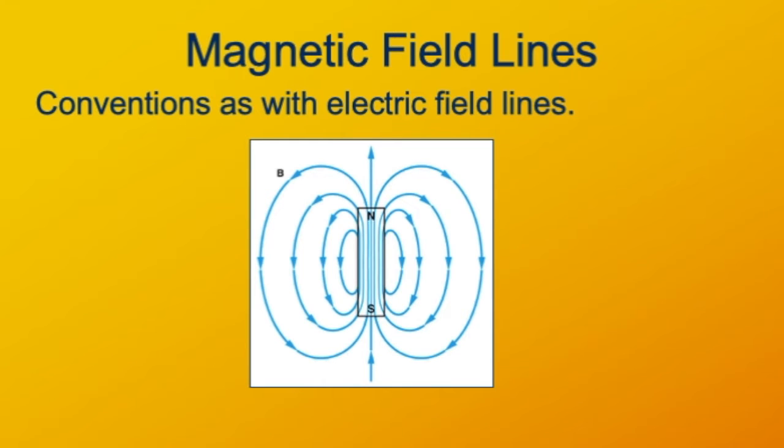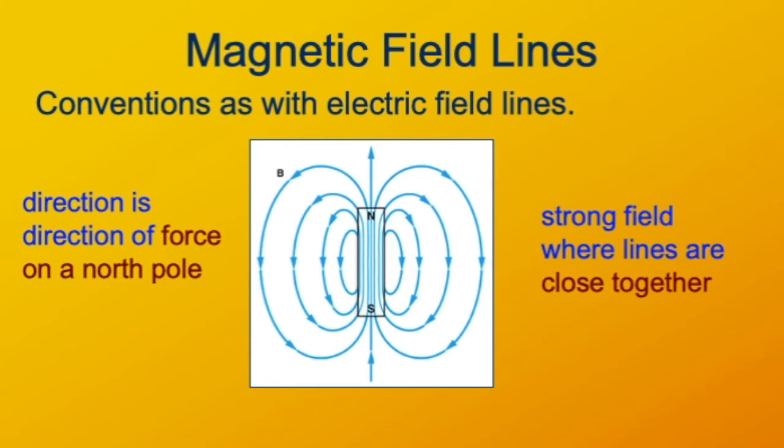The conventions for drawing magnetic fields as magnetic field lines are pretty much the same as we had for electric fields as electric field lines. We draw field lines that explain a force, and what we're looking at here is the force on a magnetic north pole, just as with electric field lines we were looking at the force on an electric positive charge. Also, just as with electric fields, magnetic fields are strongest where the field lines are close together.